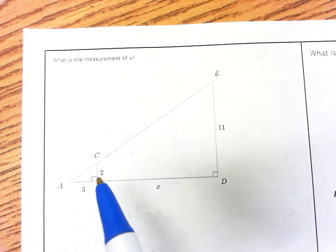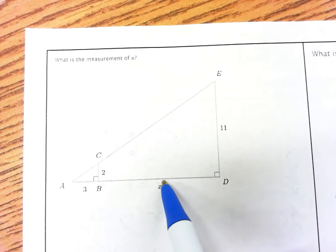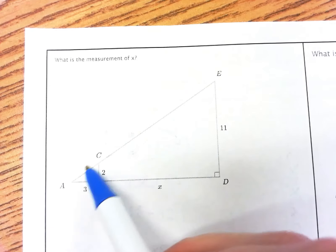This is question number seven on the study guide for skill quiz number four. The question says, what is the measurement of x? So we have x right here, and then we know that we have two similar triangles.